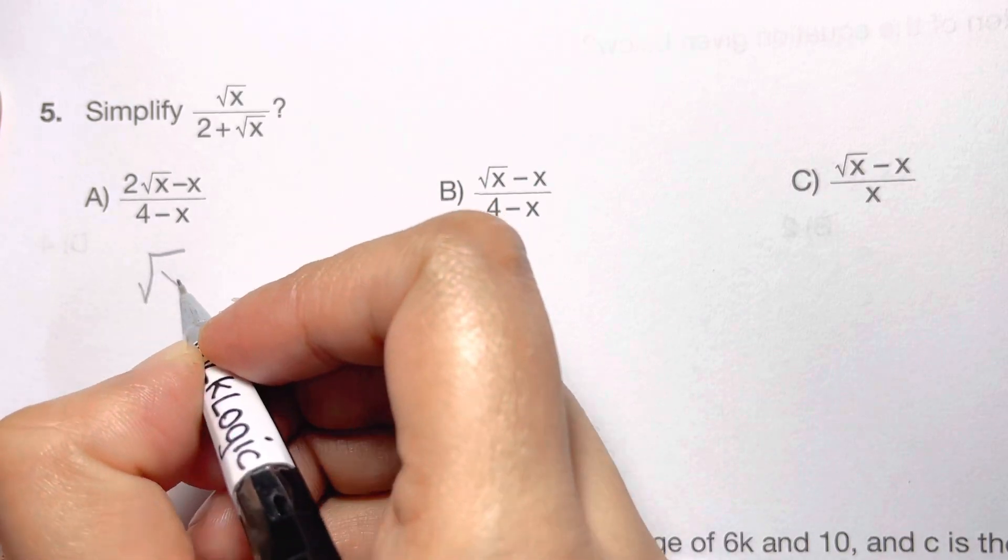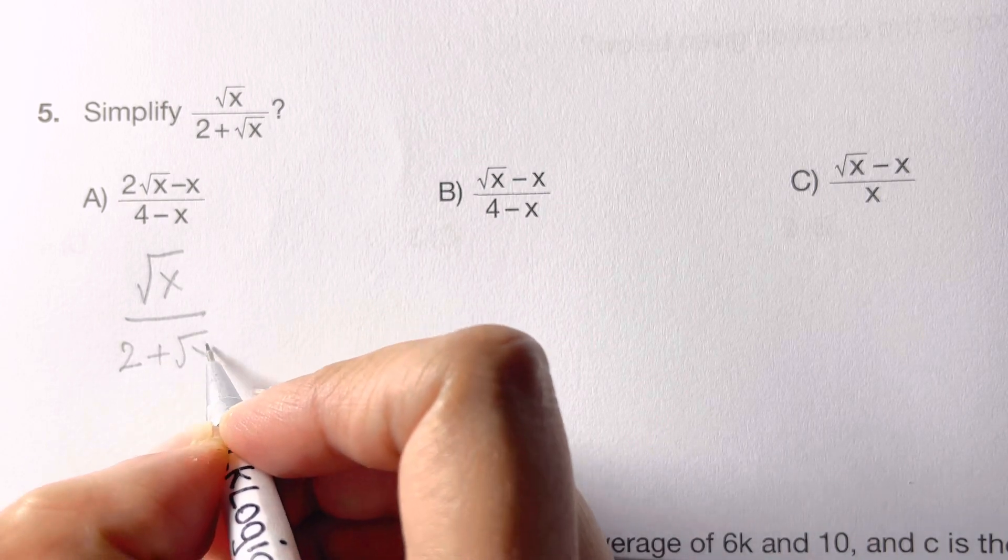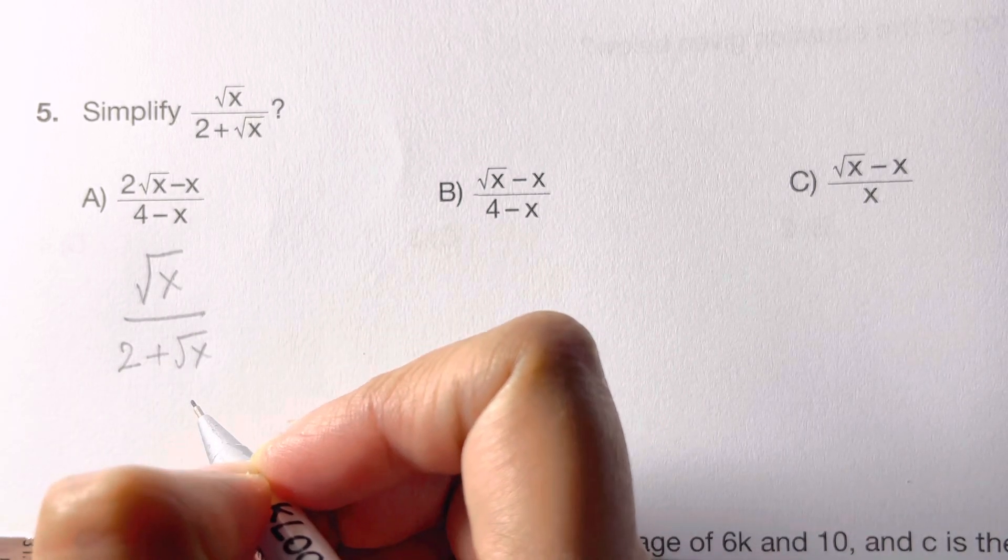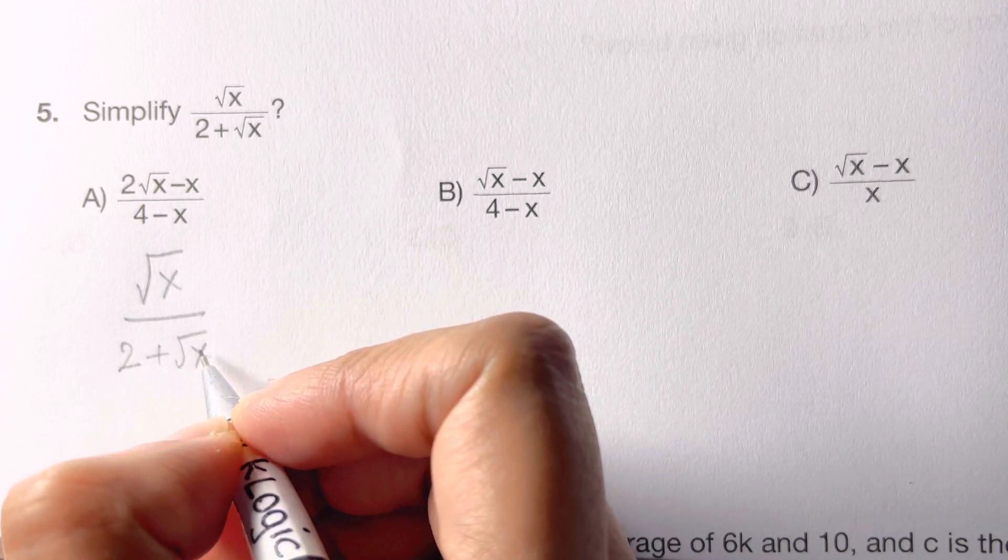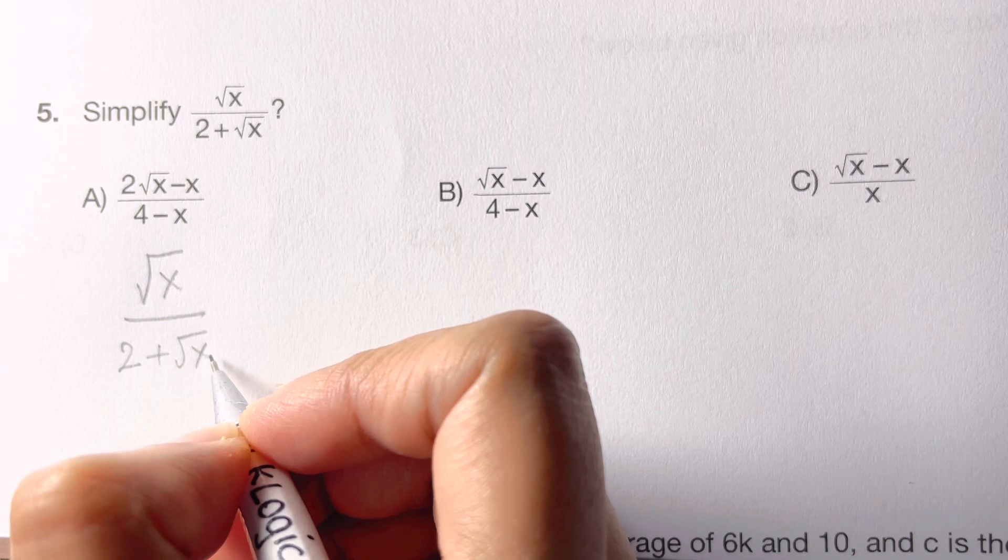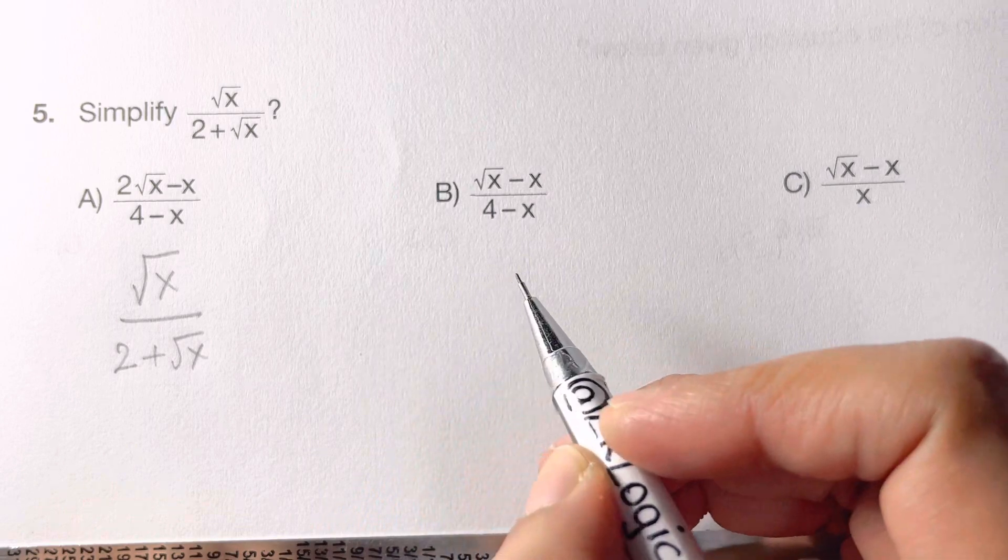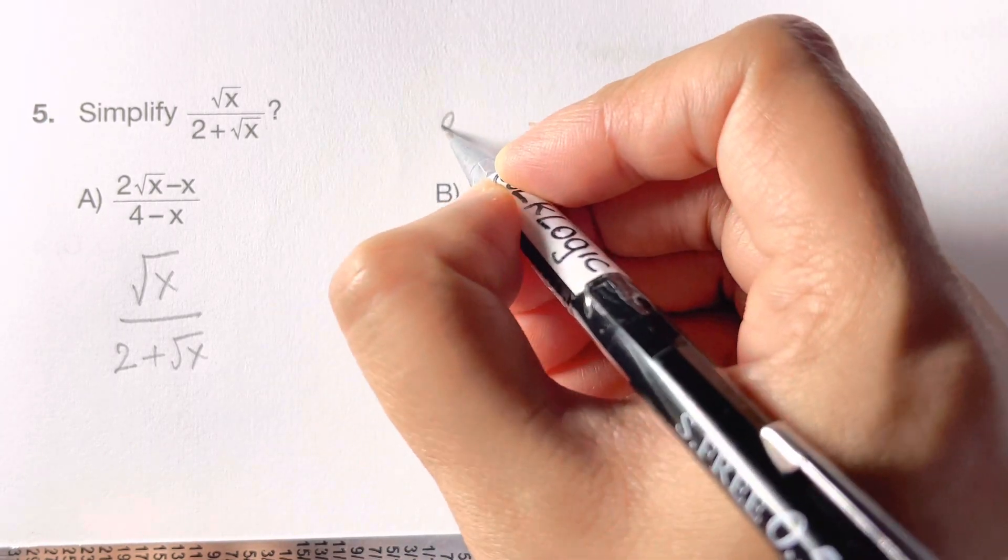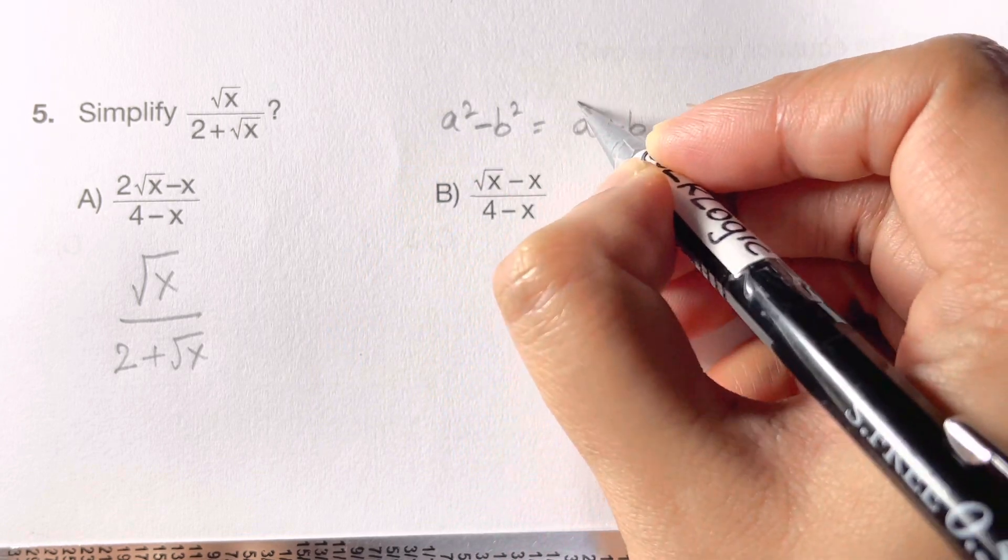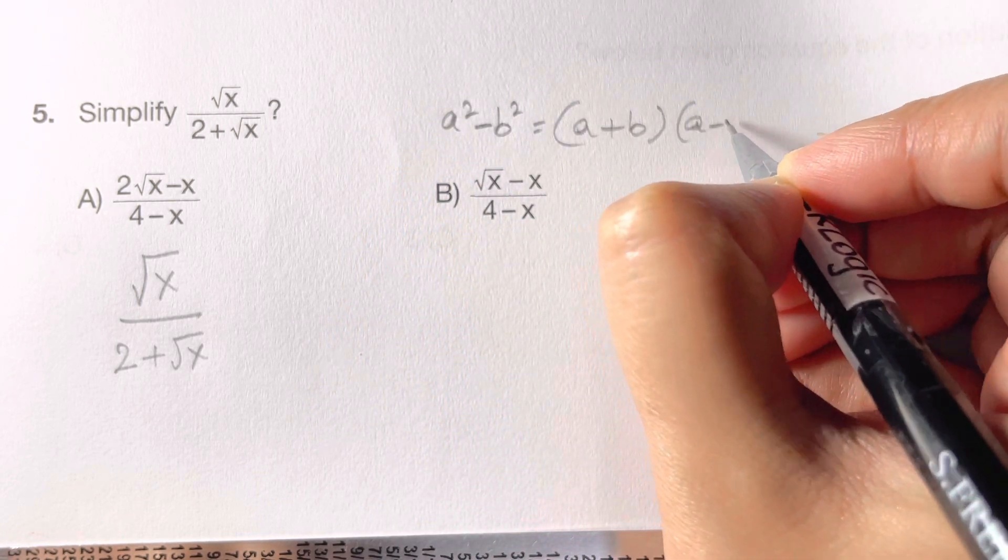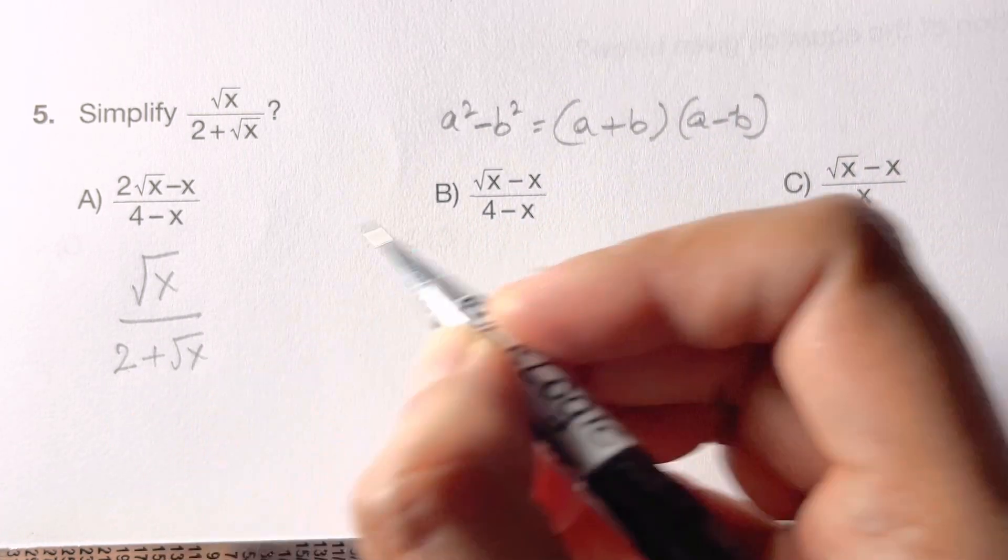You have root x over 2 plus root x. So when you're doing rationalization, you check your denominator to convert it into an identity, and what identity is that? That is a square minus b square. I'm going to write that identity: a square minus b square which is equal to a plus b times a minus b. This is what we're going to use.